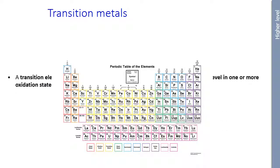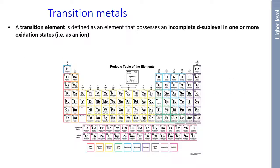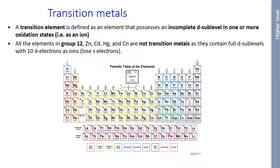So the transition metals. A transition element is defined as an element that possesses an incomplete D sub-level in one or more oxidation states, which means basically when it's an ion. This therefore means that the members of group 12 here, zinc, cadmium, mercury, and copernicium, are not transition metals. Because when they form ions, they lose the S orbitals, but they have these full D sub-levels. You need to have incomplete D sub-levels when you are forming ions to be considered a transition element.